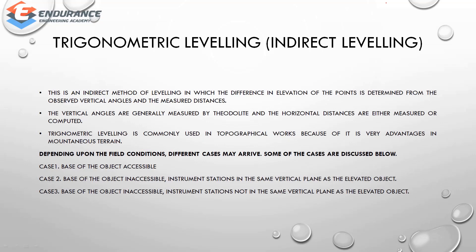The next topic is trigonometrical leveling, also called indirect leveling. In this method, you measure vertical angles and horizontal distances between two points at different elevations. There are three cases: first, the base of the object is accessible; second, the base of the object is inaccessible and the instrument stations are in the same vertical plane as the elevated object; and third, the base is inaccessible and the instrument stations are not in the same vertical plane.